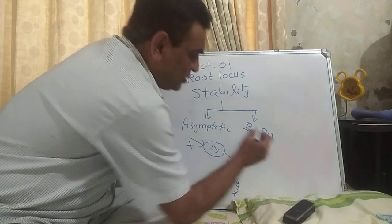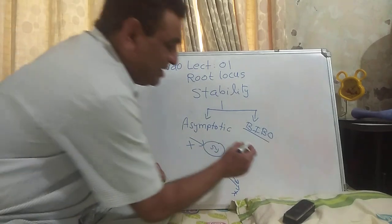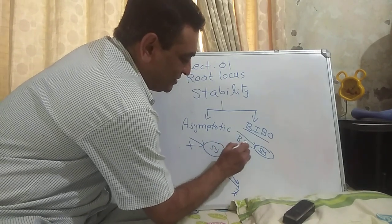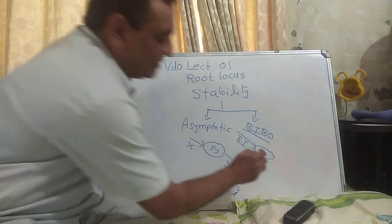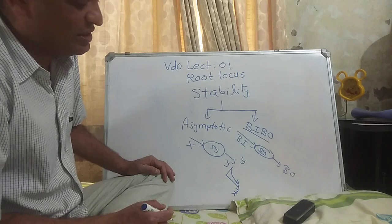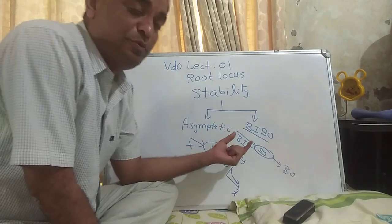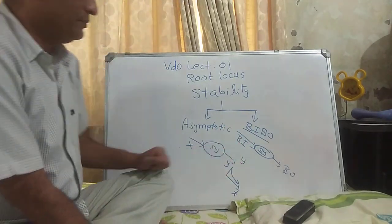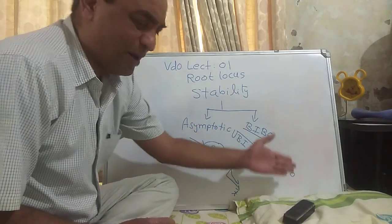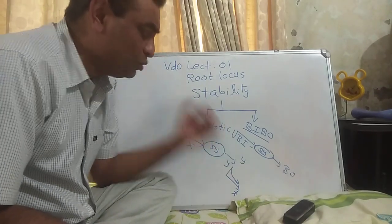Another notation for stability is BIBO stability — bounded input bounded output stability. This means that if there is a system and I give a bounded input, it results in a bounded output; the system is said to be BIBO stable. If I give an unbounded input and it results in bounded or unbounded output, I cannot comment on the stability. To comment on stability, I should apply bounded inputs.